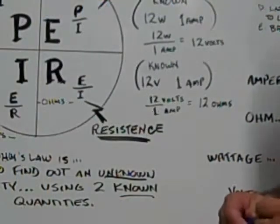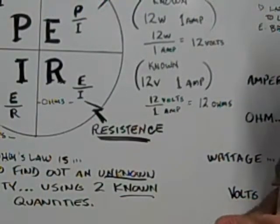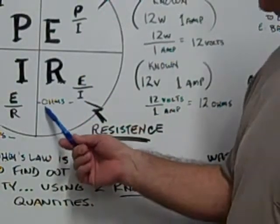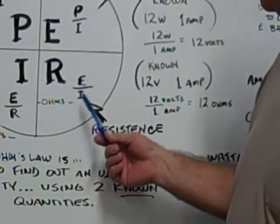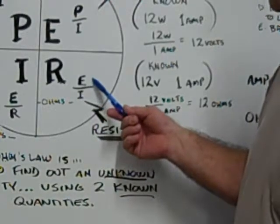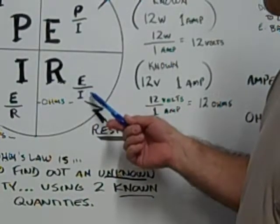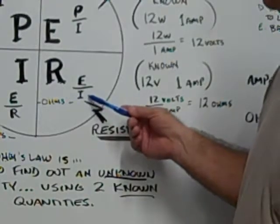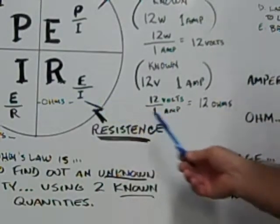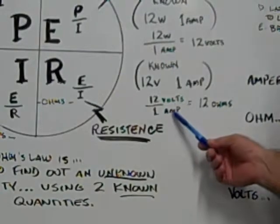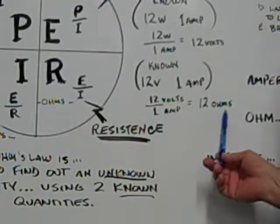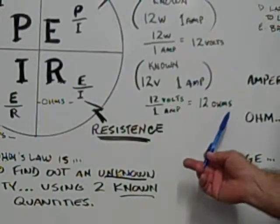So you want to find out the resistance of a light bulb. Resistance is indicated by the letter R, also known as ohms. If you divide E, which is voltage, by I, which is current or amps — for example, 12 volts divided by 1 amp equals 12 ohms — that gives you your unknown.